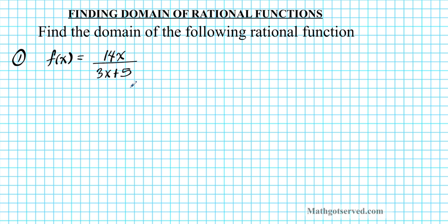To find the domain of a rational function, we are simply going to solve the equation where the denominator is set equal to 0. Any x value that causes the denominator to be equal to 0 must be excluded from the domain, since inputting that value results in an undefined output.